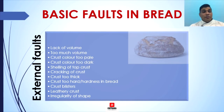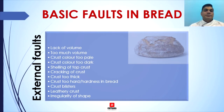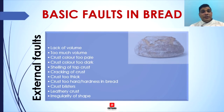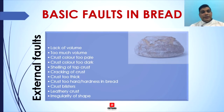Next is shell top or shelling of the top crust. This is due to the formation of a crust on top of the loaf before maximum expansion has taken place. The pressure from within the loaf expresses itself in such a way that the top of the loaf lifts in a form of a lid — that is why it is called shelling of the top.